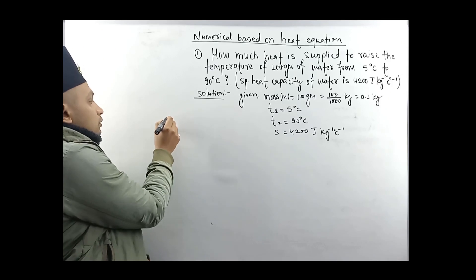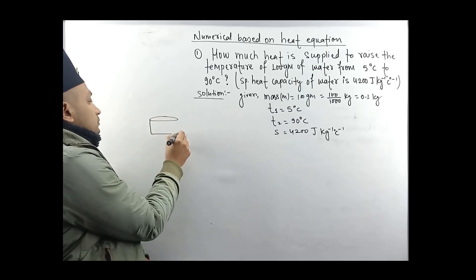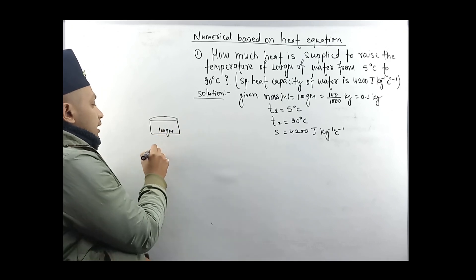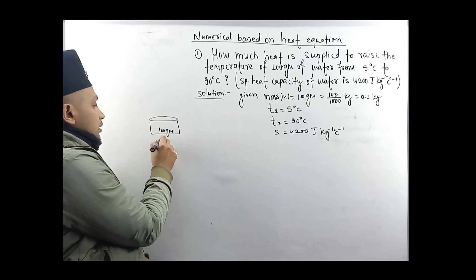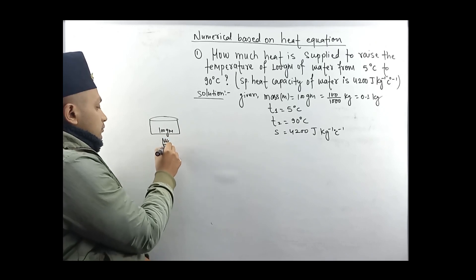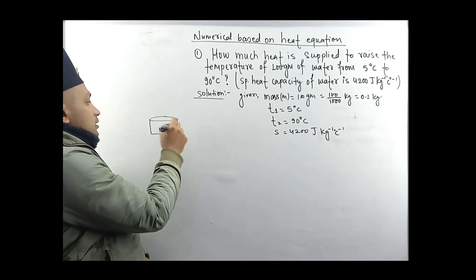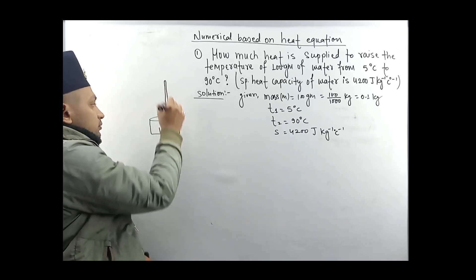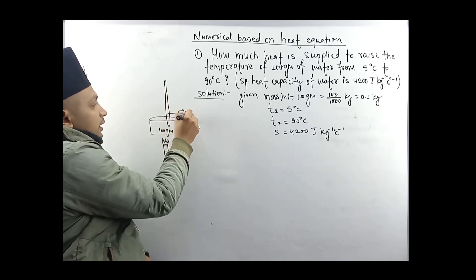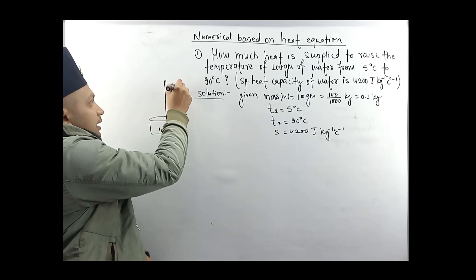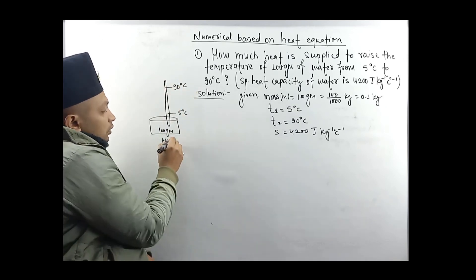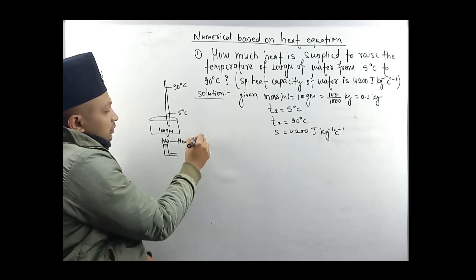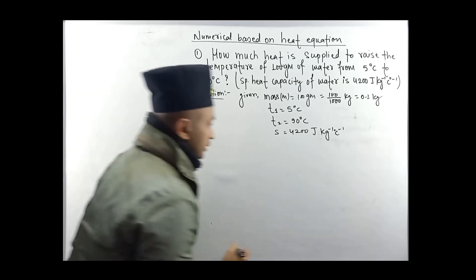We have 100 gram of water. We need to find how much heat is required. The thermometer shows temperatures from 5 degree Celsius to 90 degree Celsius. How much heat is supplied?